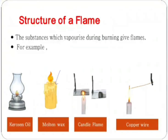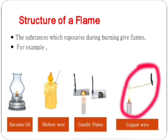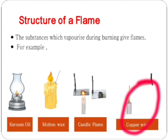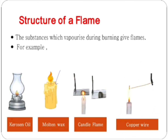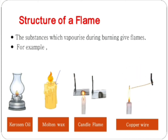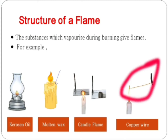Next, hold a copper wire just inside the outermost zone of the flame for about 30 seconds. Observation: the copper wire becomes red hot. Conclusion: the copper wire becomes red hot because the temperature of the outermost zone of the flame is very high.